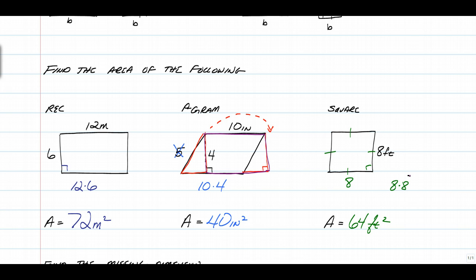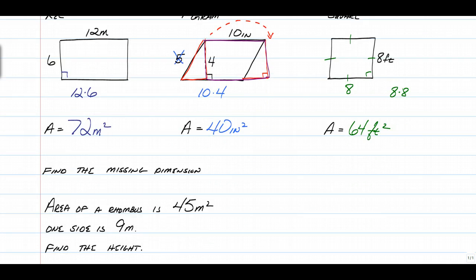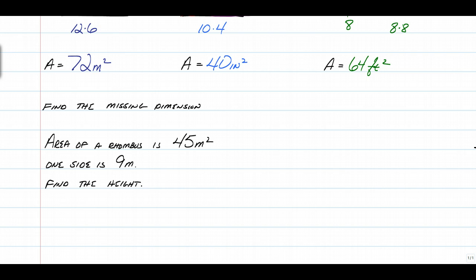That's how you find the area of parallelograms. So there's one other thing we're going to talk about real quick, and that's just how do you work backwards. So if I tell you that the area of a rhombus is 45 meters squared and one of the sides is 9, we just have to find the height. So in terms of a rhombus, you have to remember all sides are congruent. So if one side is 9, then they're all 9. So we know that the base is 9.